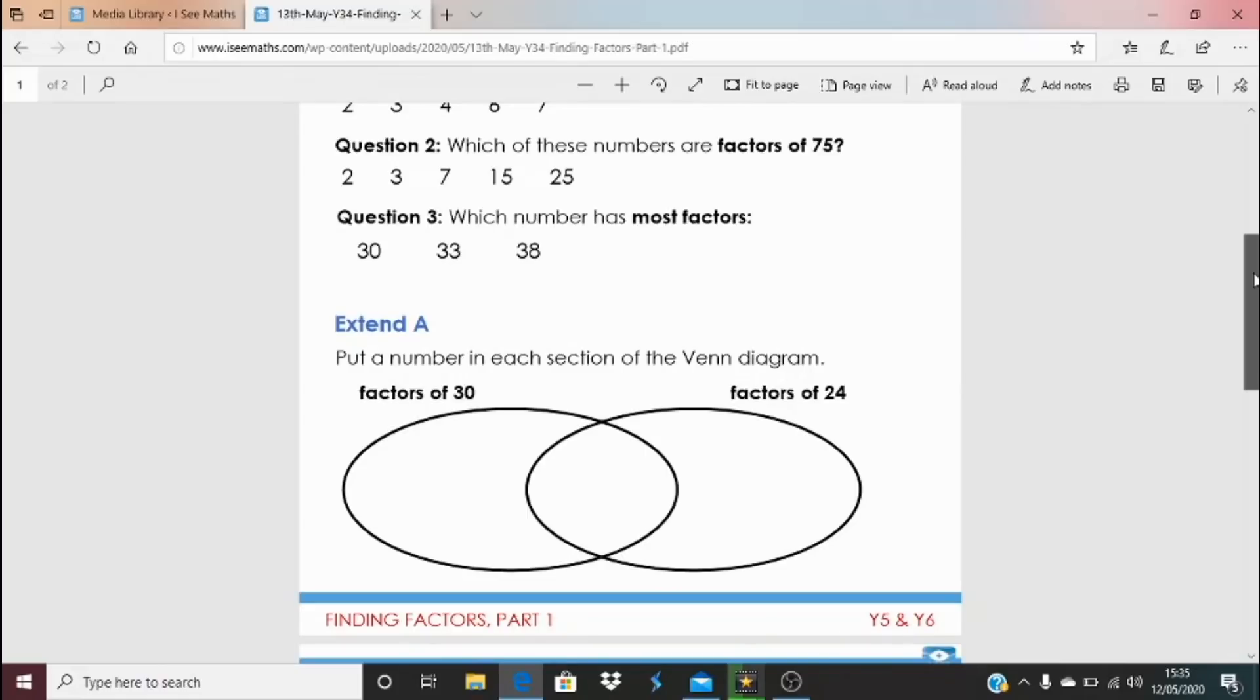So we're using Venn diagrams. So put a number in each section of the Venn diagram. Can you think of a number that's just a factor of 30 in here, but not a factor of 24? One that's a factor of both, and then one that's a factor of just 24. And numbers that are a factor of neither 30 nor 24.